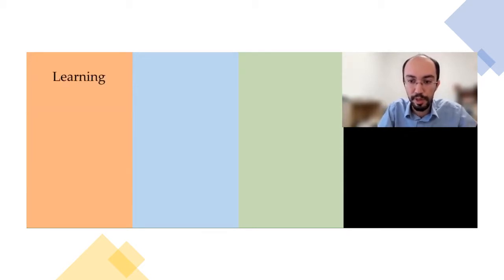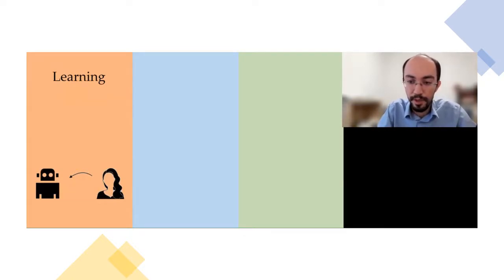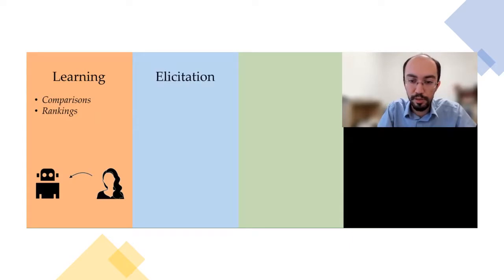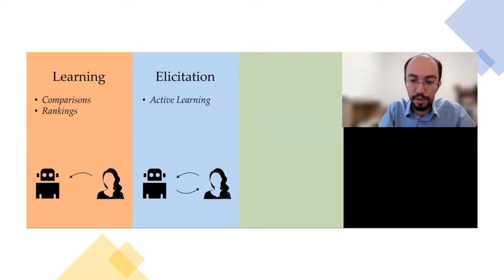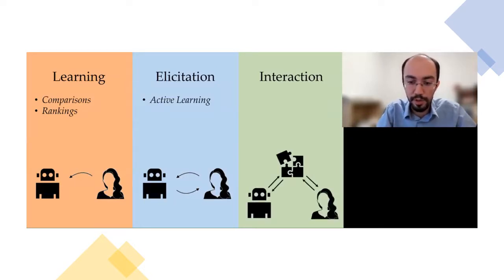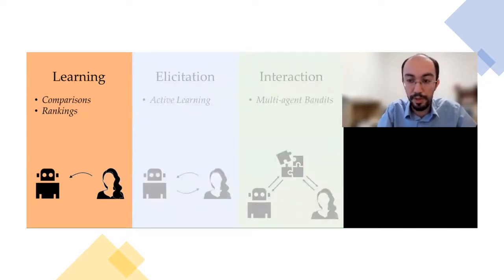First, I'll start with learning methods, where the goal is to learn humans' objectives based on the information we acquire from them — this information can be in different forms such as comparisons or rankings. Then I will move to the second section I call elicitation, where the robot can elicit information from the human, making it a two-way interaction and an active learning problem. Finally, I will show examples of how robots use learned objectives for planning in multi-agent systems, specifically multi-agent bandit problems.